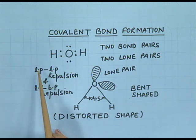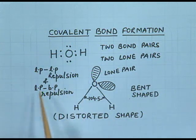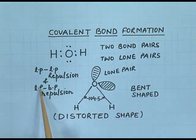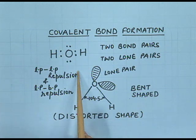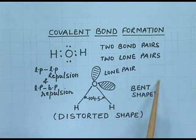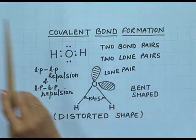There will be lone pair–lone pair repulsion and lone pair–bond pair repulsion. Due to these repulsions, the shape of the water molecule is distorted, and we say that the shape of the water molecule is bent.